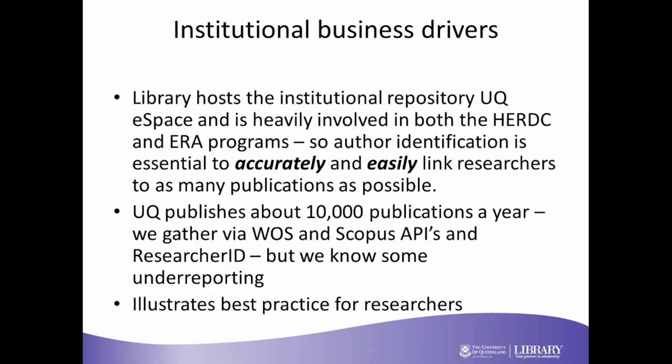One of the things we were asked to talk about was our business drivers. The library hosts the institutional repository and we're heavily involved in the HERDIC and ERA programs, so it's essential we have good author identification. To give you an idea, UQ publishes about 10,000 publications a year, so it's important that we assign the right paper to the right academic. We gather our data through Web of Science, the Scopus API, and ResearcherID, and we do know there's some under-reporting — when we implemented the Scopus API last year we were quite surprised by how many new records we got.